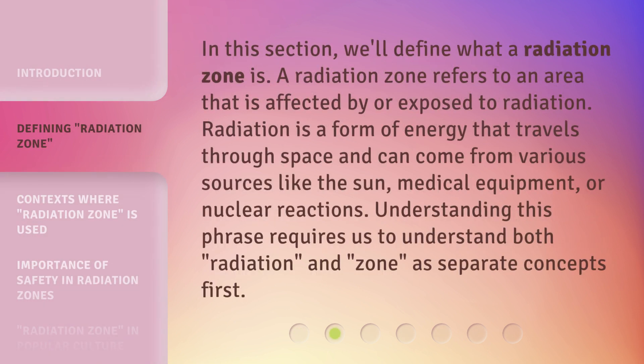In this section, we'll define what a radiation zone is. A radiation zone refers to an area that is affected by or exposed to radiation. Radiation is a form of energy that travels through space and can come from various sources like the sun, medical equipment, or nuclear reactions. Understanding this phrase requires us to understand both 'radiation' and 'zone' as separate concepts first.